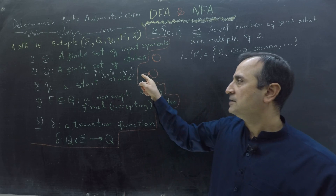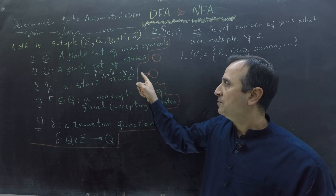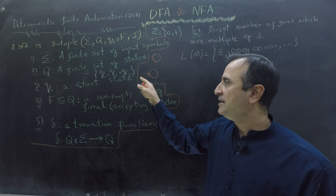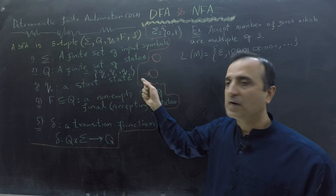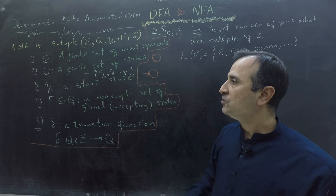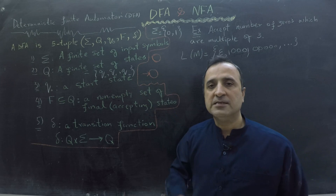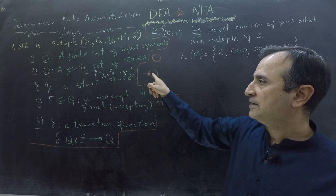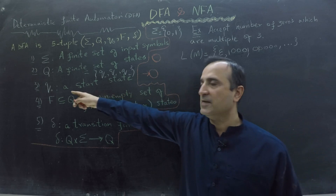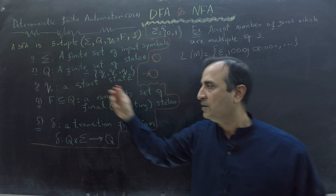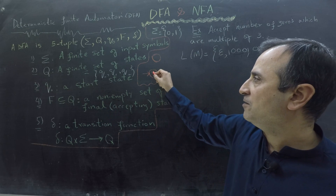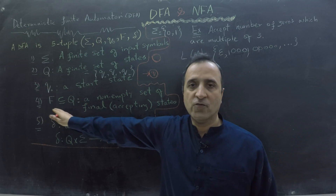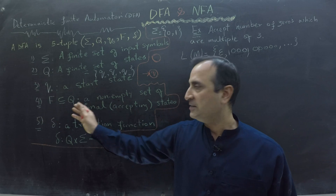This incoming arrow must have no source; it represents the start of the machine. Each state has its name inside it. Because my start state is Q0, inside the circle it will say Q0. A DFA must also have a set of final states.